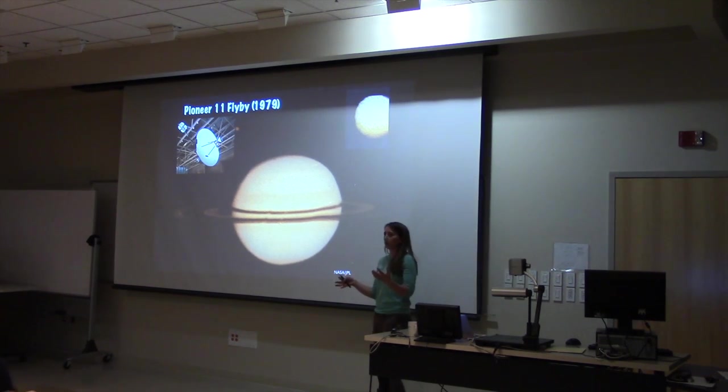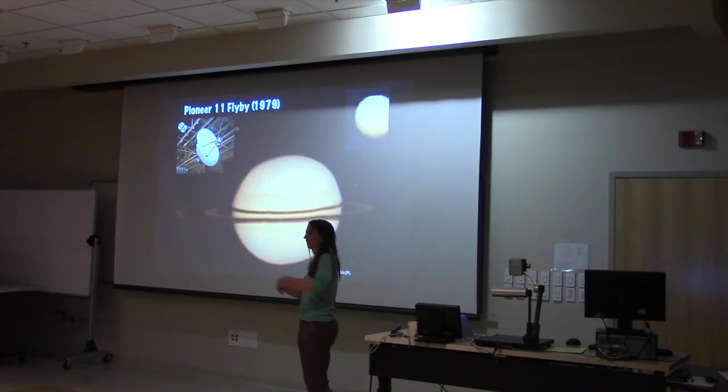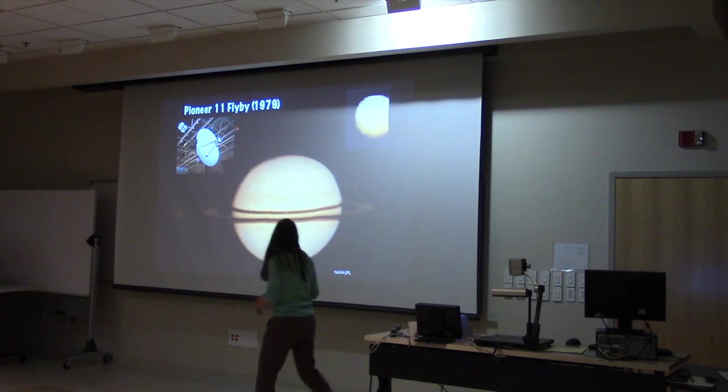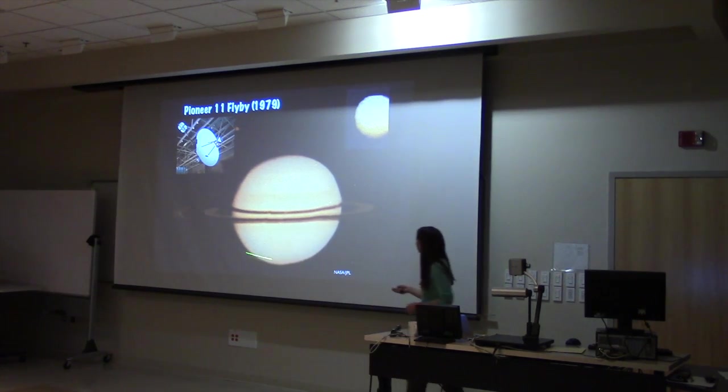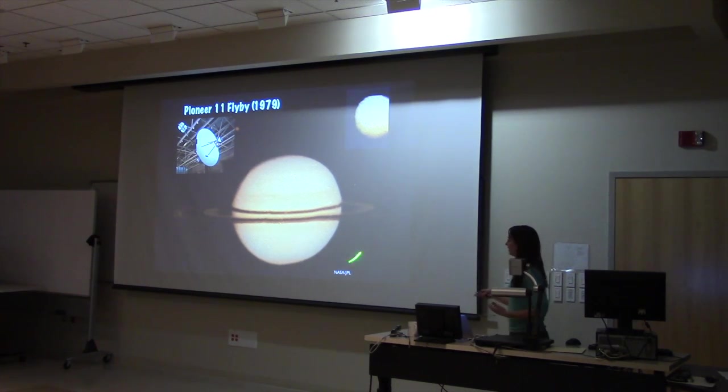These are two examples of images that Pioneer sent back. Back in those days, the biggest problem with planetary spacecraft was having enough bandwidth to send the data that it was receiving back to Earth. So you can see these images that it took are quite blurry.